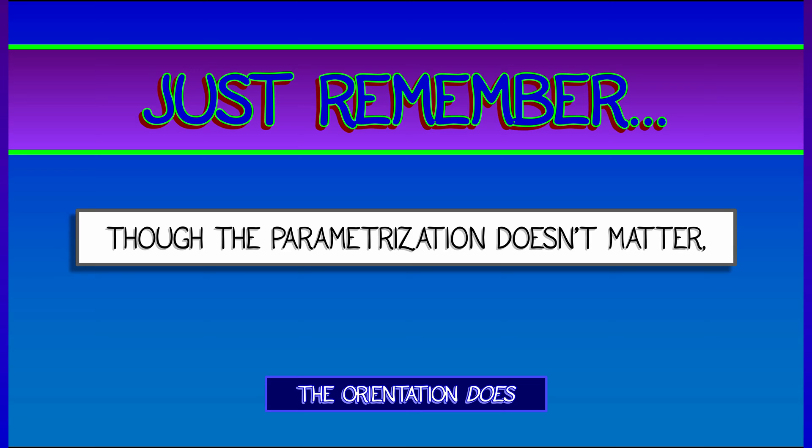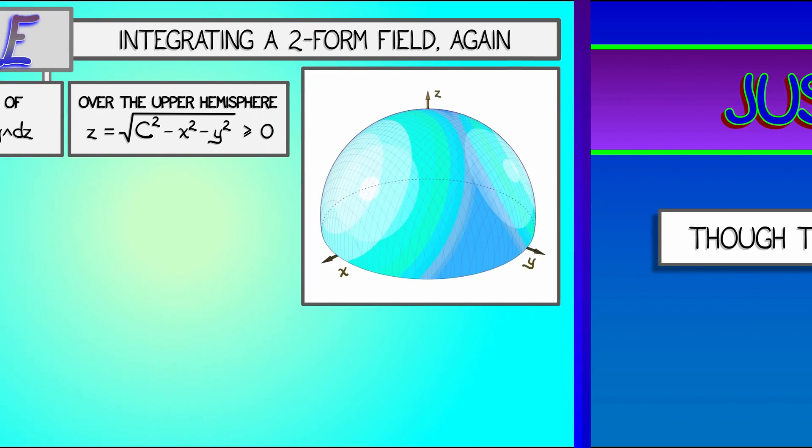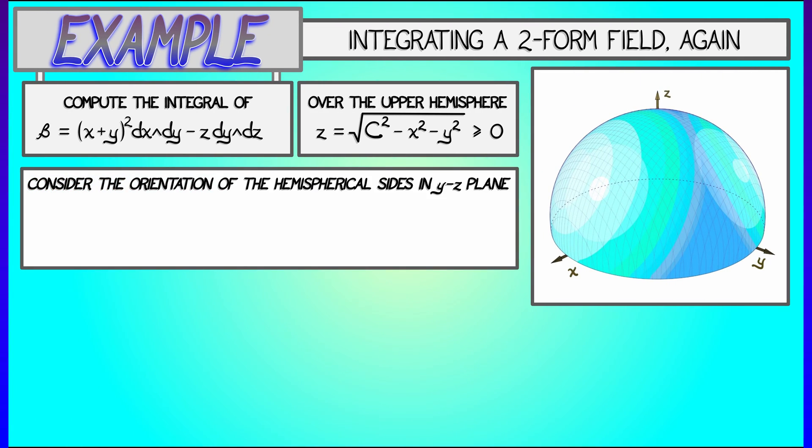Let's go back to an example that we just did, where we integrated the two-form field beta, given by quantity x plus y squared dx wedge dy minus z dy wedge dz, and we integrated that over a hemisphere of radius c, an upper hemisphere.